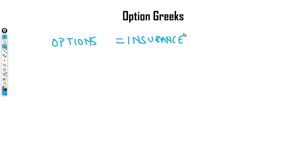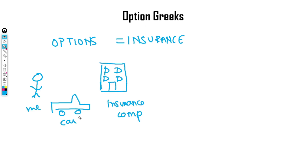Welcome to this video on option Greeks. Before we start, it is really important to understand how an option contract works — the fundamentals. Did you know that option contracts are exactly similar to insurance contracts? All of us are aware of health insurance, life insurance, or at least auto insurance. Let's see how a basic insurance contract works. Let's assume I go to buy insurance for my car, and this is the insurance company. Any insurance contract usually comes with three main parts.